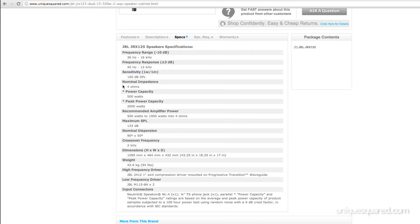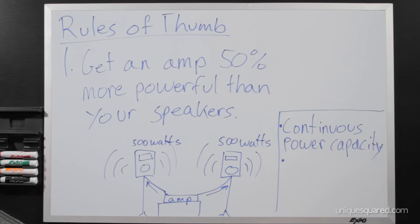Remember our spec sheet? There are two numbers. One was the power capacity, which was 500 watts for the JRX 125. Other spec sheets might call it continuous power capacity, RMS power handling, or program watts. But they all mean the same thing. You're going to want to ignore the peak power capacity.